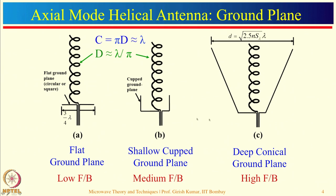Different shapes of ground plane are used for different performance levels. A flat ground plane of dimension 3/4 lambda still has considerable back radiation, giving a low front-to-back ratio. To reduce back radiation, one can use a shallow cup shape ground plane, giving medium front-to-back ratio. For applications where back radiation must be as small as possible, a glass or bucket shape ground plane is used, giving very small back radiation, a high front-to-back ratio, and slightly enhanced gain.